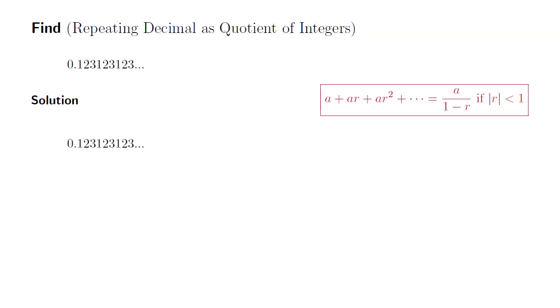All right, so we have 0.123123123 and so on. I'm going to separate this into each repeating decimal. The first one is 0.123, the next one is 0.000123, and the next one is 0.000000123, and so on.